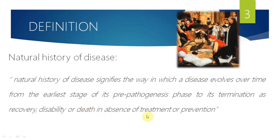If no prevention or treatment is applied, the pathogen's course may end in recovery, disability, or death — that is the natural history of any disease. The process begins when we're at risk of infection — for example, going to a slum where a cholera epidemic is occurring. We are exposed to cholera bacteria through water, with a high chance of acquiring it, though the pathogen has not yet entered the body.